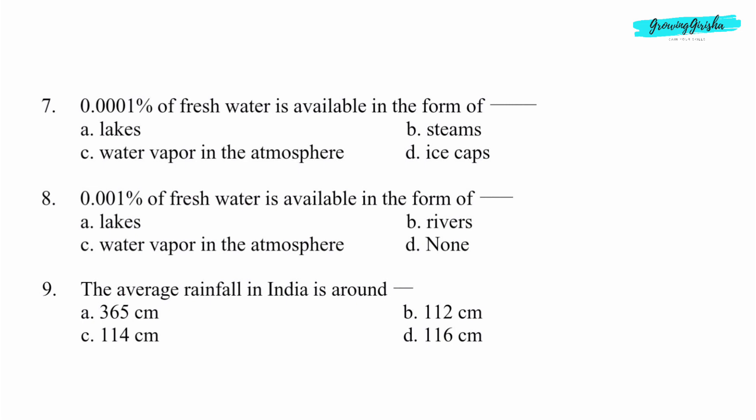Question 7. 0.0001% of fresh water is available in the form of dash. Option B: Streams.